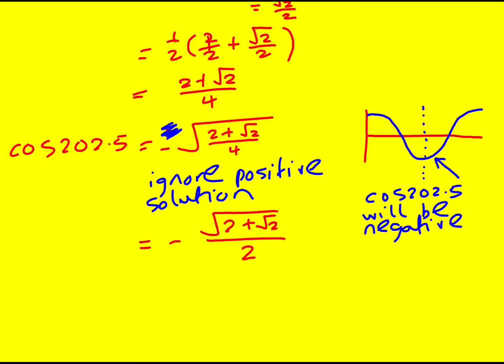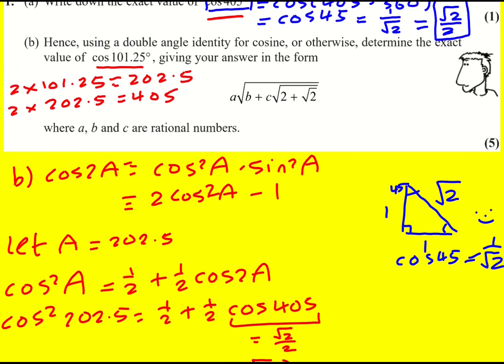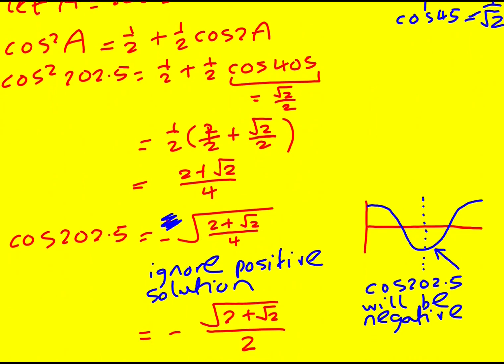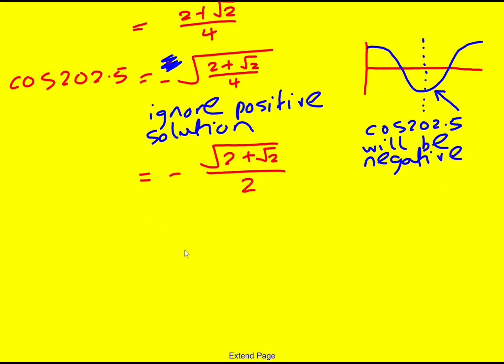Now I want cos 101.25°. I'm going to actually do the same thing again. So what I can do is take this formula and let A this time equal 101.25°.